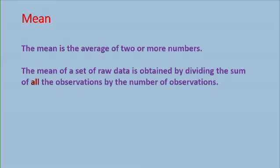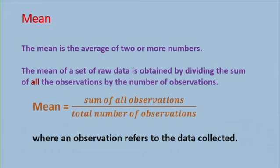Now we are going to consider the mean. What is mean? It is something that you have already covered at primary level. You have called it average. So mean is the average of two or more numbers. The mean of a set of raw data is obtained by dividing the sum of all the observations by the number of observations. Mean equals sum of all observations over total number of observations, where an observation refers to the data collected.